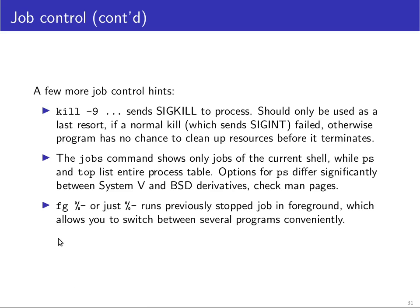As a little exercise: start an editor, suspend it with Ctrl+Z, then start a second editor, suspend it as well, and then get the first editor back into the foreground with fg and terminate it. Then use fg to get the other editor back into the foreground and terminate it as well, to get a feel for how this works when dealing with a set of foreground and background processes. In between, you can look at all of them with the jobs command.